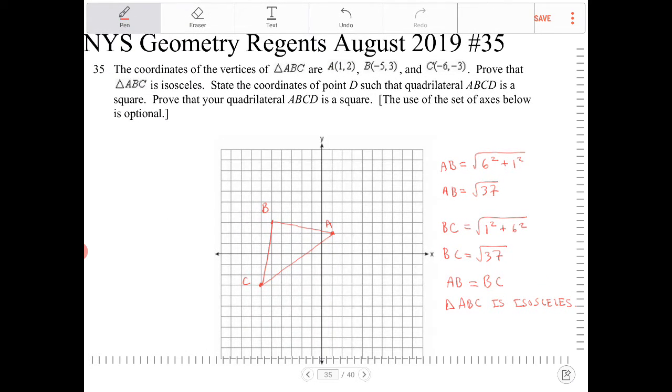All right, okay, state the coordinates of point D such that quadrilateral ABCD is a square. Prove that your quadrilateral is a square.